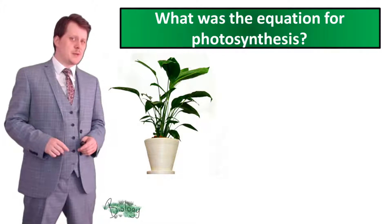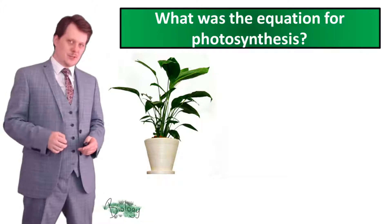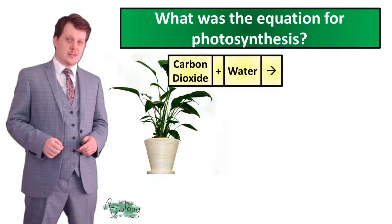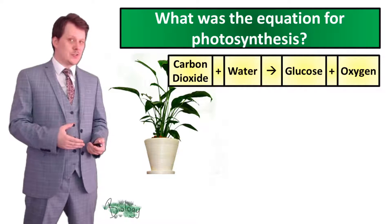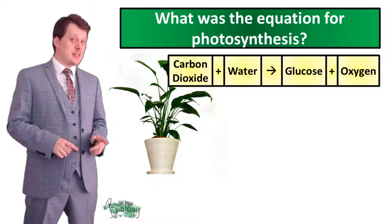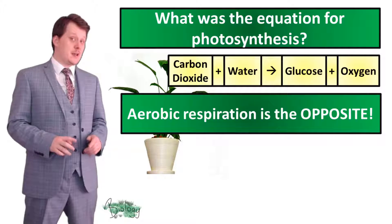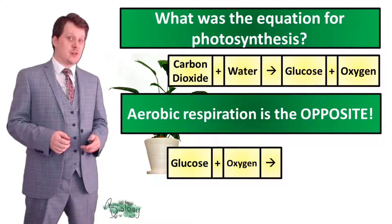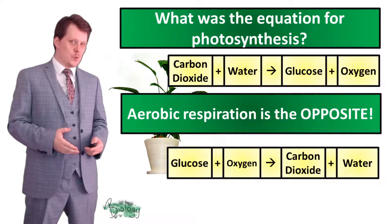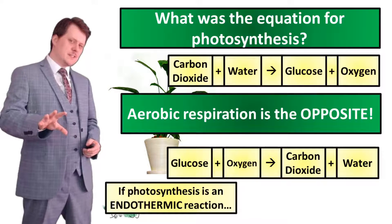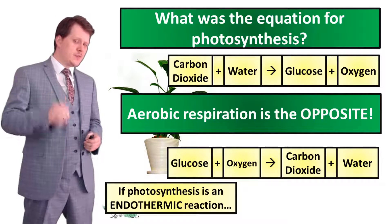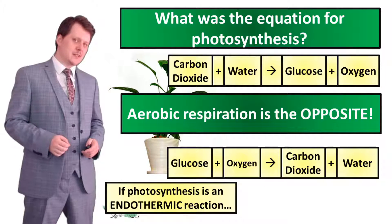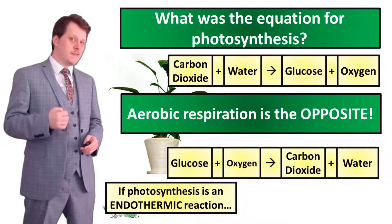Hopefully you remember the equation for photosynthesis: plants take carbon dioxide from the atmosphere and water in order to produce glucose and oxygen. Aerobic respiration is the opposite reaction — we take glucose and oxygen, and the products are carbon dioxide and water. Photosynthesis is classed as an endothermic reaction; in order to occur it needs to absorb energy from the surroundings, and this energy comes in the form of light.